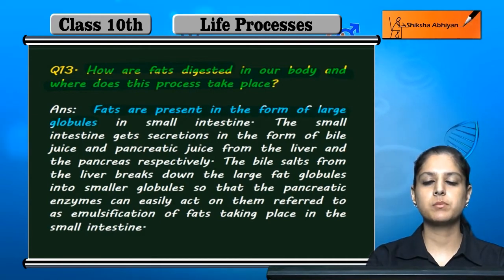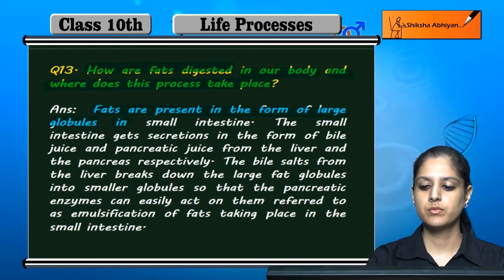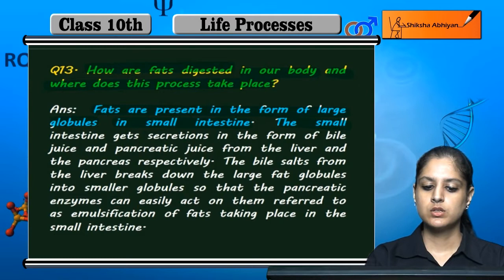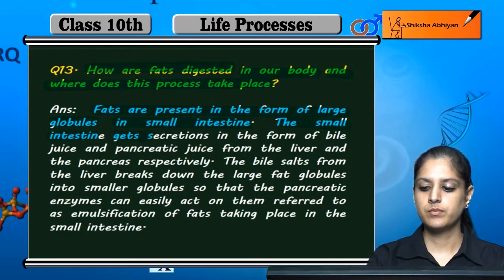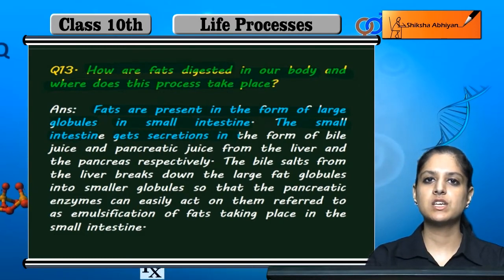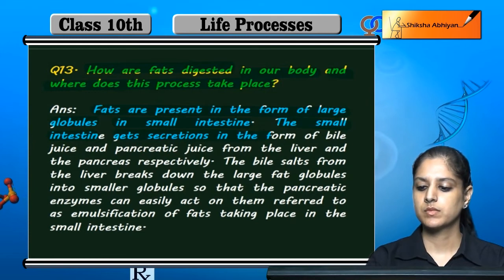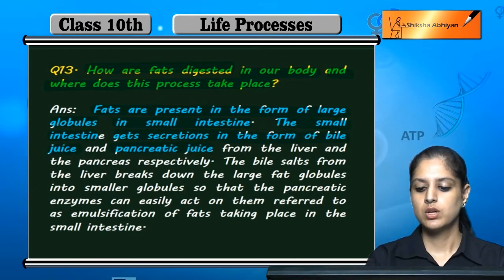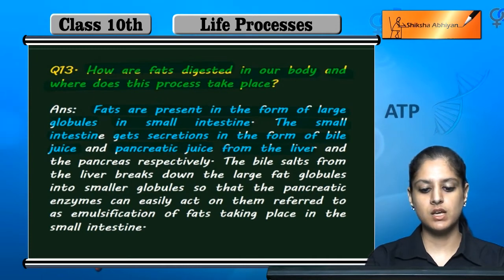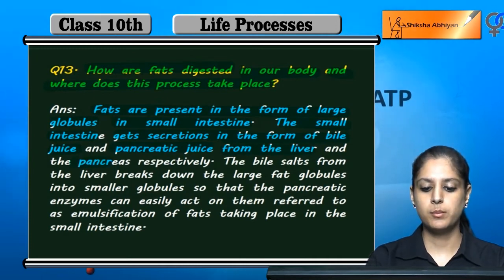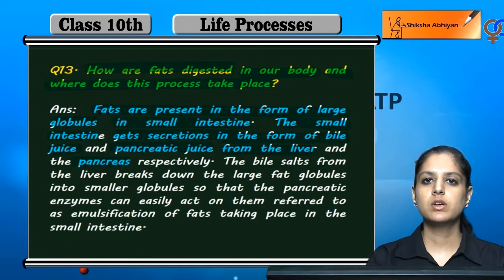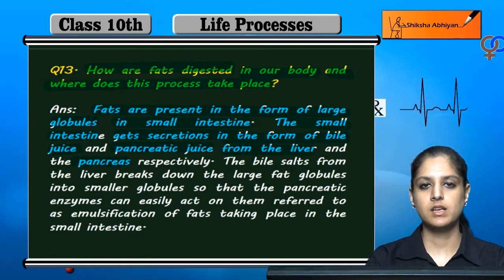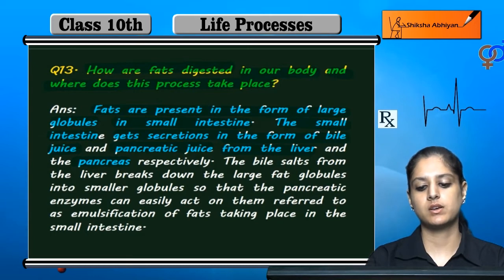Large fat globules are present in the small intestine, which has two types of secretion: one is bile juice and one is pancreatic juice. The bile juice is from the liver and the pancreatic juice is from the pancreas. So in the small intestine there are fats, and there are two secretions from the liver and pancreas.